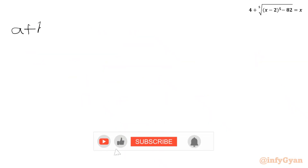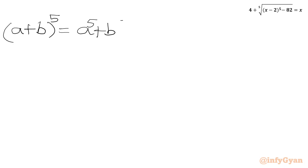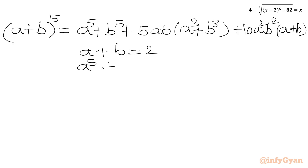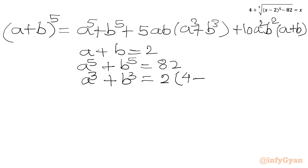Now we will utilize all three equations. I will write the binomial expansion for (A plus B) whole power 5, which equals A power 5 plus B power 5 plus 5AB times (A cubed plus B cubed) plus 10 times A squared B squared times (A plus B). We know A plus B equals 2, A power 5 plus B power 5 equals 82, and A cubed plus B cubed equals 2 times (4 minus 3AB). Substituting these values, we get 2 power 5 on the LHS.